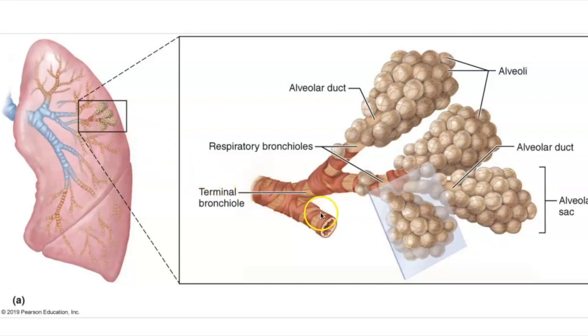The terminal bronchioles are part of the conducting passageway. In other words, it's part of the dead space. But terminal bronchioles do lead into what are called respiratory bronchioles. And respiratory bronchioles are part of the respiratory zone. They lead directly into the alveoli. And so that is where gas exchange occurs and not included in dead space.